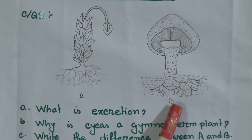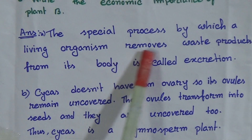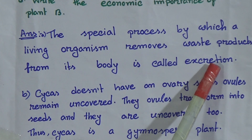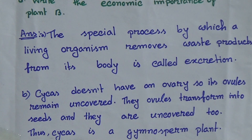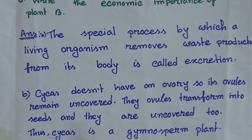Now we discuss question number A: what is excretion? The special process by which a living organism removes waste products from its body is called excretion. That means we also remove waste products from our body, like urine. Like that, plants also remove their waste products, and their process is called excretion.